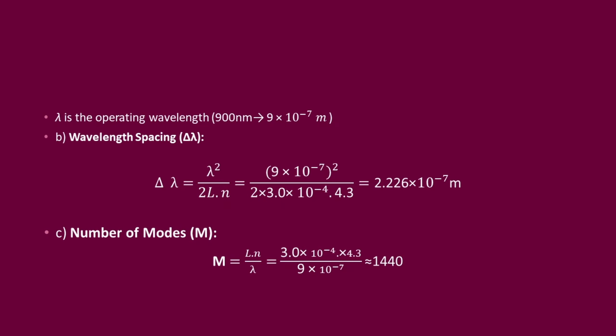Next, the operating wavelength is 900 nm, which converts to 9×10⁻⁷ m. We calculate wavelength spacing using delta lambda equals lambda squared divided by 2Ln. Substituting: (9×10⁻⁷)² divided by 2 × 3×10⁻⁴ × 4.3 gives a wavelength spacing of 2.226×10⁻⁷ m.